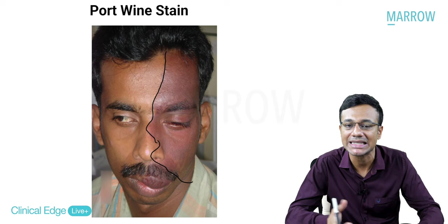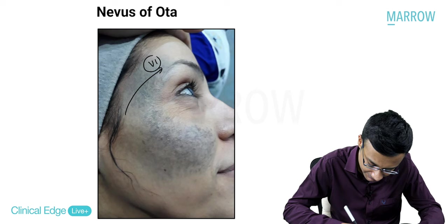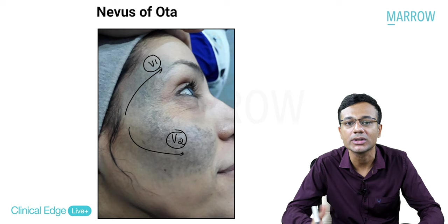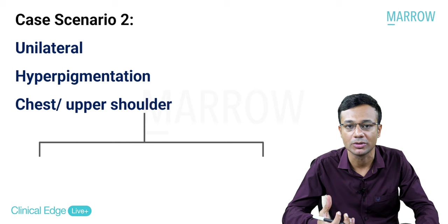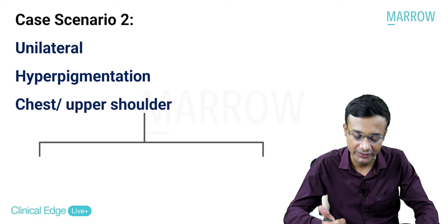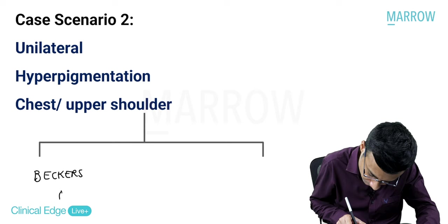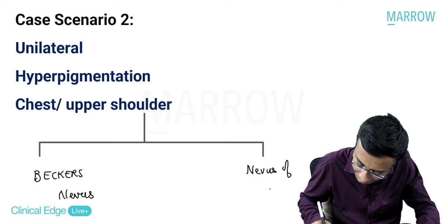Nevus of Ota follows the first and second division of the trigeminal nerve - that is why the face is involved and the sclera is involved in two-thirds of patients. Case scenario two in pigmentary disease: a patient presenting with a unilateral hyperpigmented lesion over the chest and upper shoulder. Two important differential diagnoses: number one, Becker's nevus; number two, nevus of Ito.